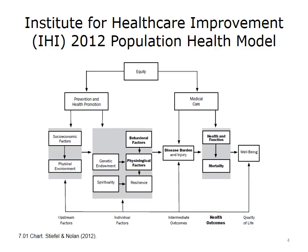Prevention and health promotion are influenced by upstream factors, which include socioeconomic factors and the physical environment. There are also individual factors, such as a person's genetic endowment, their spirituality, behavioral factors, and physiologic factors that determine resilience at an individual level. In terms of medical care, there are intermediate outcomes related to disease and injury. The upstream factors and individual factors will affect intermediate outcomes and also affect states of health — people's ability for health and function — as well as their mortality. These then lead to quality of life or well-being.